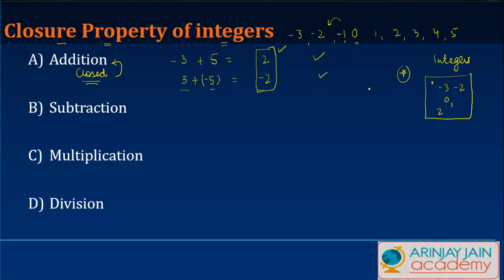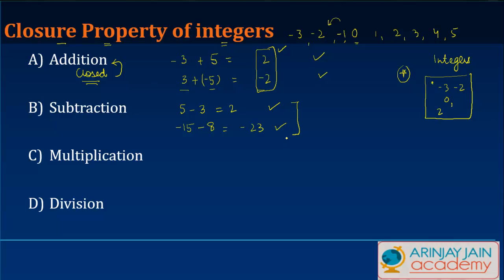The result, the output, is always going to be within this box. Subtraction: 5 − 3 = 2. Let's take −15 − 8 = −23. This is an integer, this is an integer, and this is an integer. Similarly, you can keep performing these operations on as many numbers as you want and the result is always going to be an integer, which means that integers are closed under subtraction.